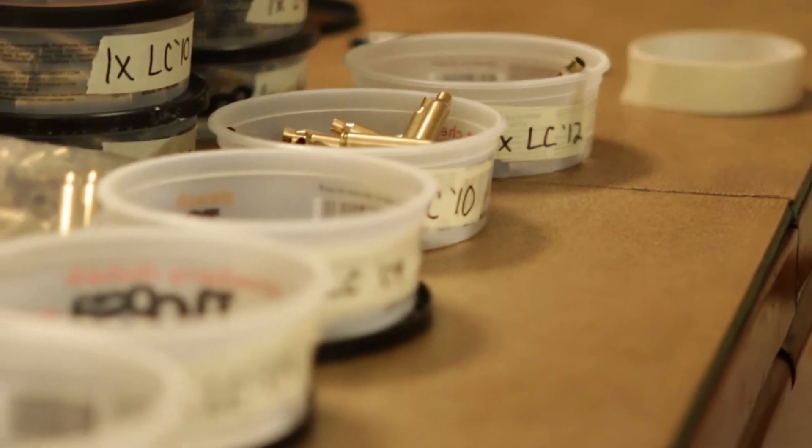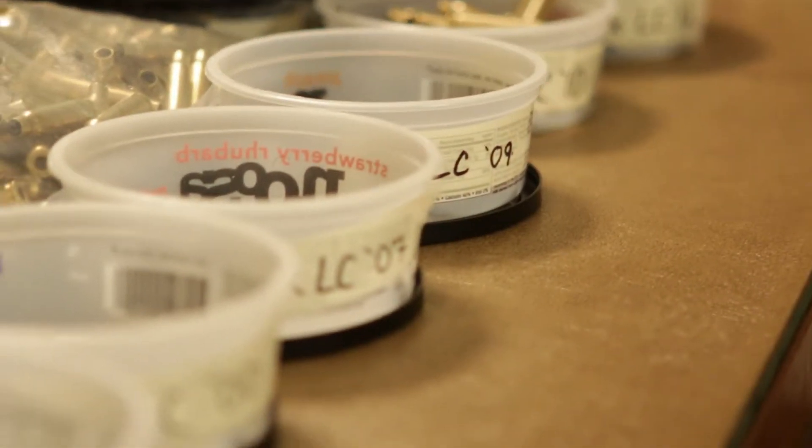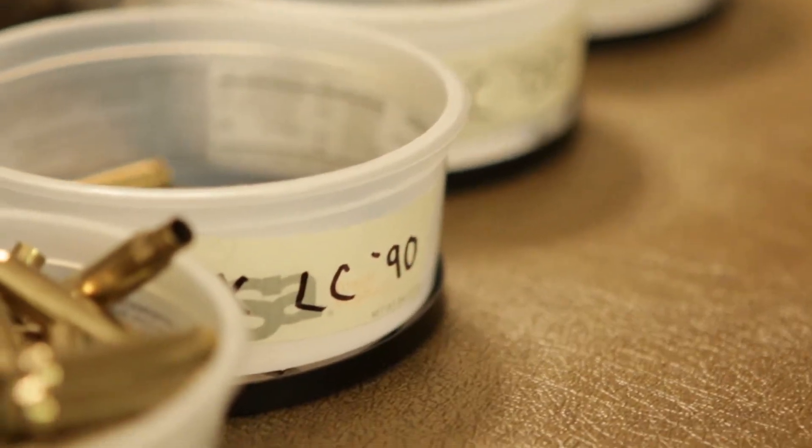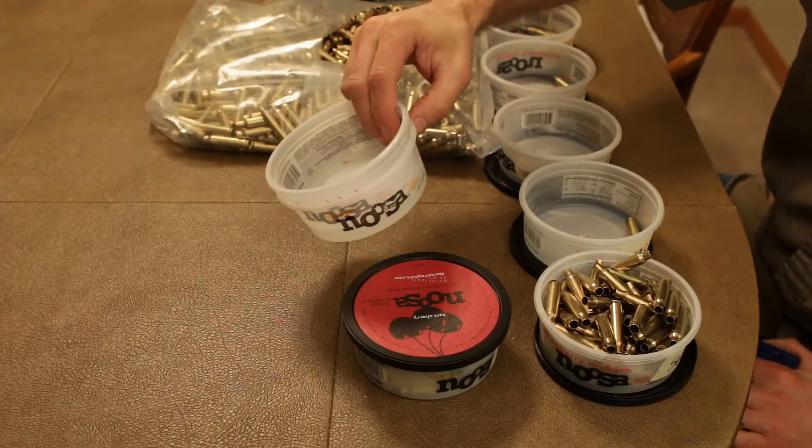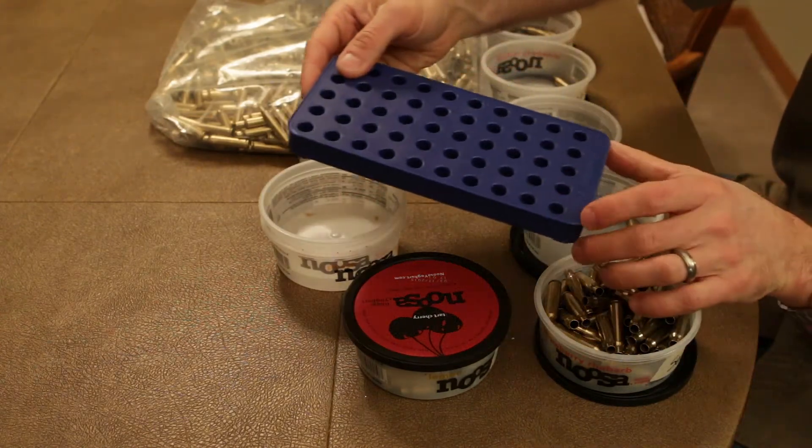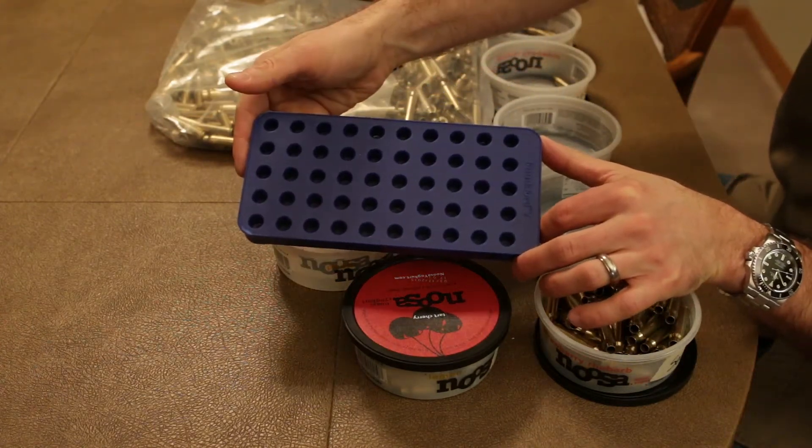You'll need a large flat surface with good lighting, as well as quite a few small containers in which to sort the various categories of cases. I like to use these old yogurt containers because one 8-ounce container holds the same number of shells as one case tray.